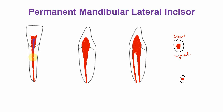This purple color indicates the reduction in size of the pulp chamber and the canal. Similarly, in the labial-lingual section, the labial-lingual dimension of the pulp chamber and canal is usually the widest, but with age there is also a reduction in this dimension. In the cervical cross section as well, there is a reduction in the size of the canal.